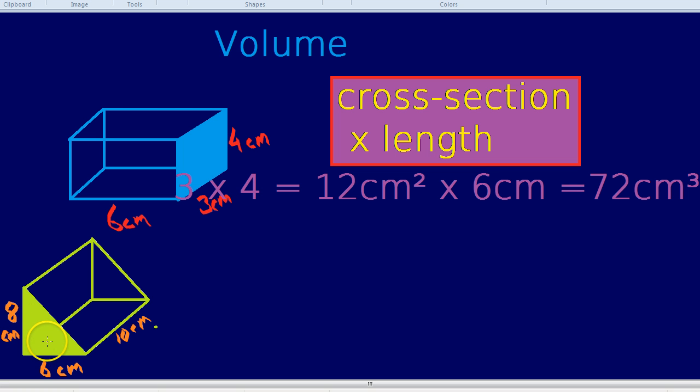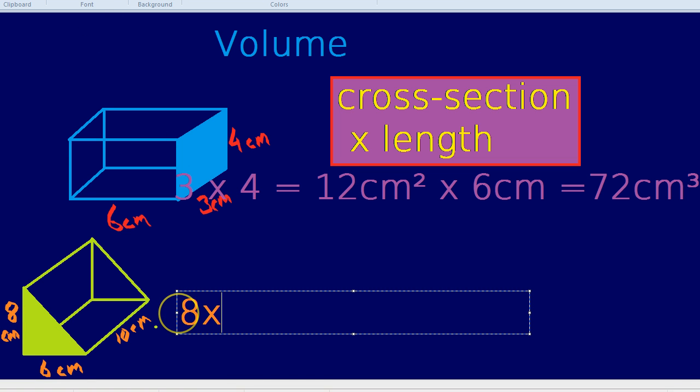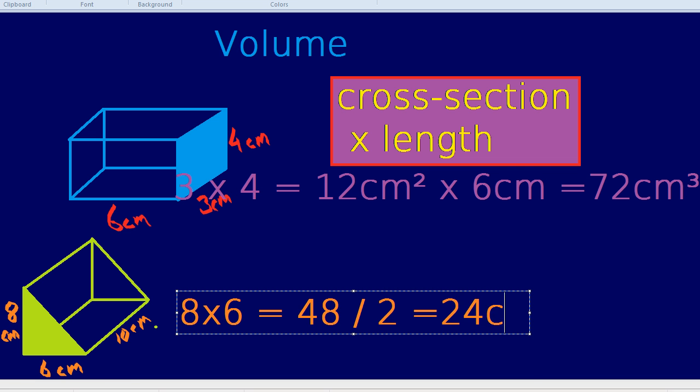This triangle, let's get its area. You do 8 times by 6, which is 48. So, is that the area of that triangle? No, because remember, it's a triangle, so we have to divide by 2. 48 divided by 2 is 24 centimeters squared. The area of that cross-section is therefore 24 centimeters squared.